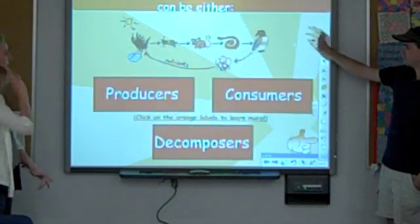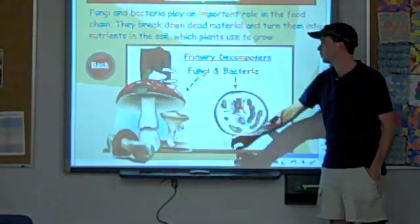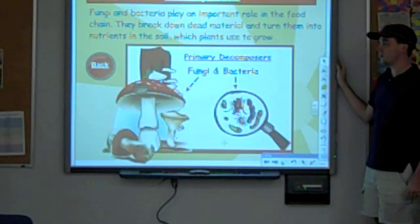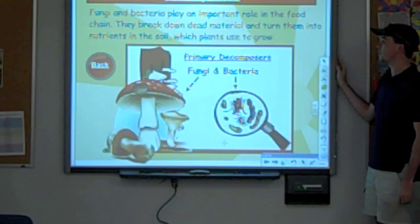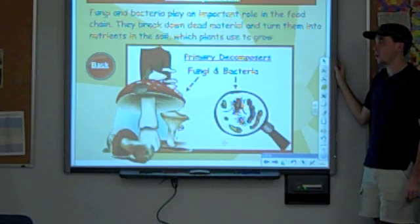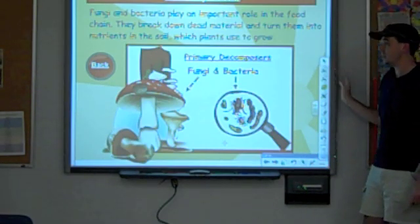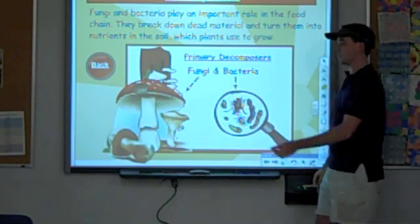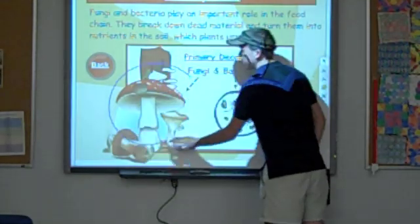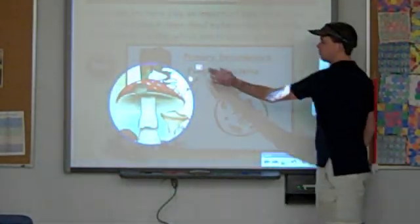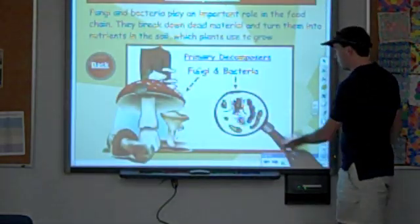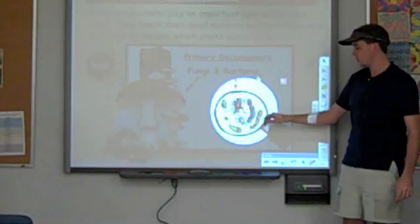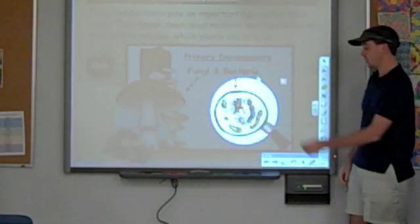Now Mr. Brandon will tell us about decomposers. Decomposers are fungi or bacteria that play an important role in the food chain. They break down dead material and turn them into nutrients in the soil, which plants use to grow. Primary decomposers are fungi and bacteria — a main fungi is a mushroom. Some main bacteria include worms, possibly amoeba, and other small organisms.